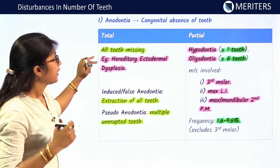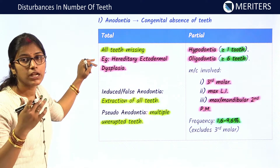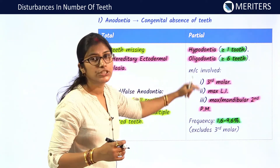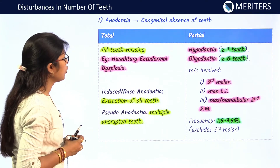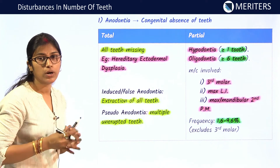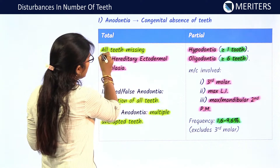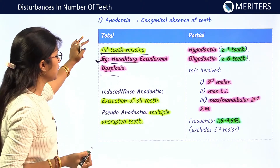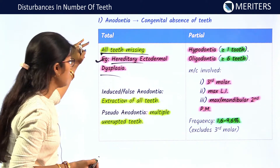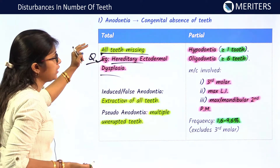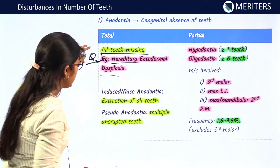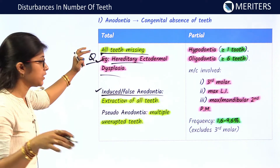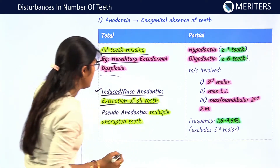Anodontia is the congenital absence of teeth. It can be total anodontia or partial anodontia. In total anodontia, all teeth are missing. The condition associated with total anodontia is hereditary ectodermal dysplasia — you should know this condition as it is very important. Next is induced or false anodontia, where extraction of all teeth has been done.